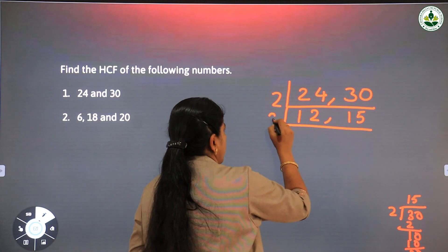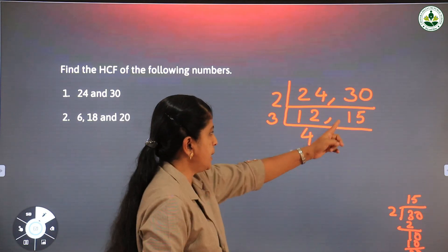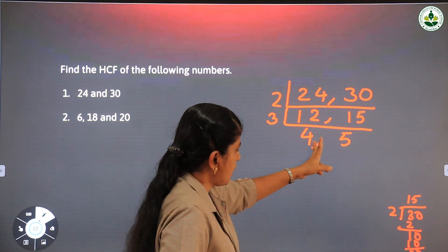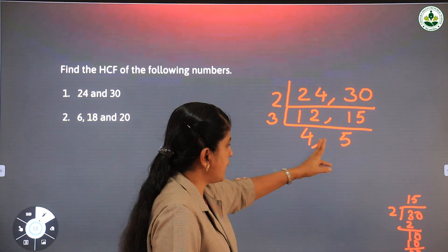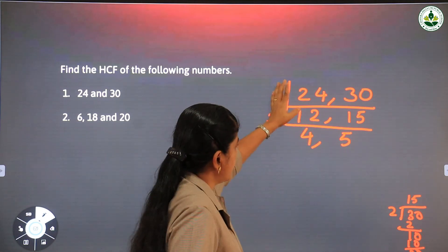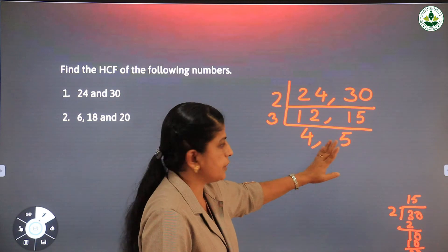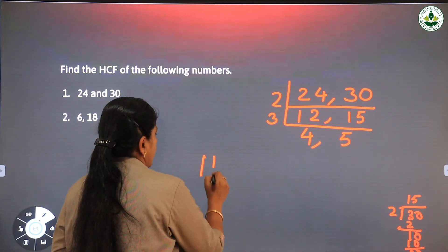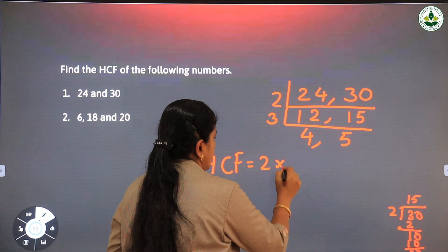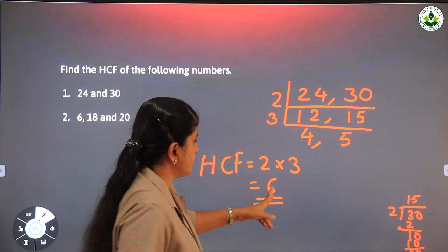Divide by 3: 12 ÷ 3 = 4 and 15 ÷ 3 = 5. Now the remaining numbers are 4 and 5. There is no number that divides both — 4 is divisible by 2 but 5 is not, and 5 is a prime number so 4 is not divisible by 5. Therefore stop the process here. The HCF is the product of the divisors used: 2 × 3 = 6. So the highest common factor of 24 and 30 is 6.